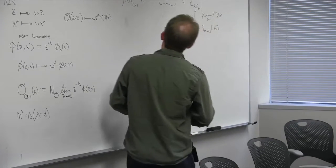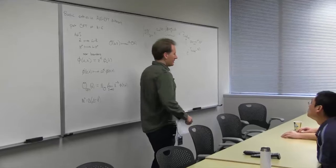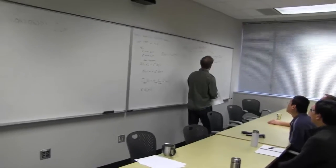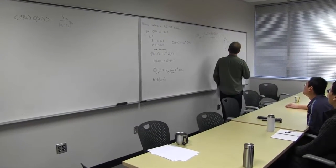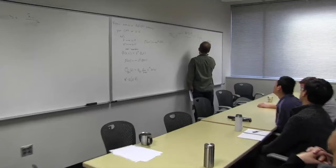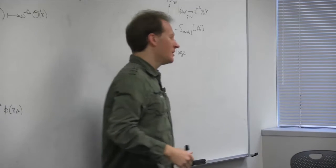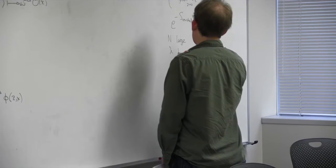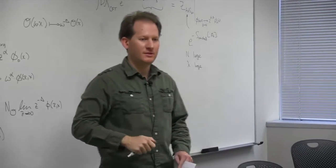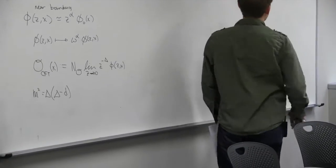So if we're interested in computing correlation functions for the CFT, then we want calculations on the right-hand side to be easy. That means, as we discussed in the first lecture, we want N large so that we don't have to do quantum gravity in ADS — we want to just do classical gravity. And we want the 't Hooft coupling large so that we don't have to deal with all these alpha-prime corrections from the fact that strings are big and floppy. So instead we're just doing classical supergravity.